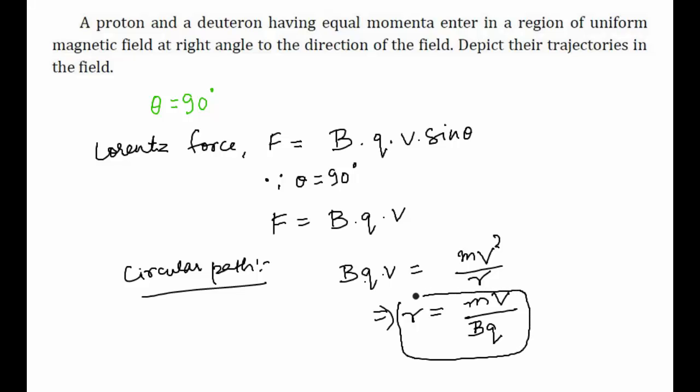Since a proton is positively charged, it will execute a circular trajectory. This quantity will be positive, and thus it will follow a circular trajectory. And since